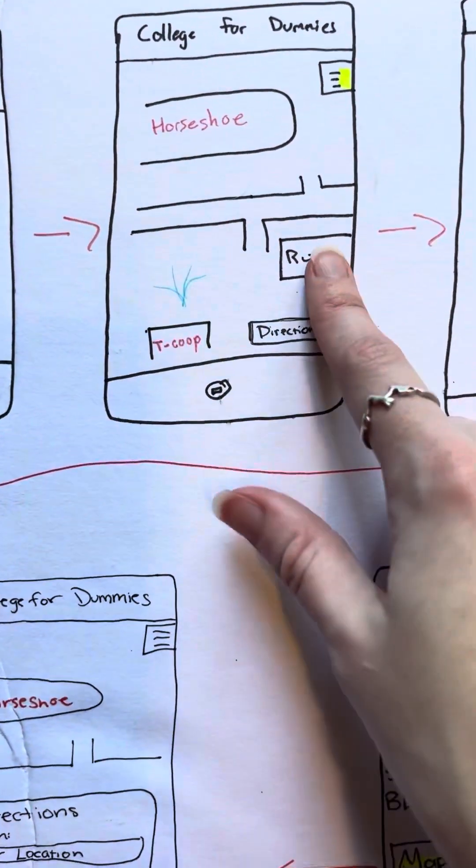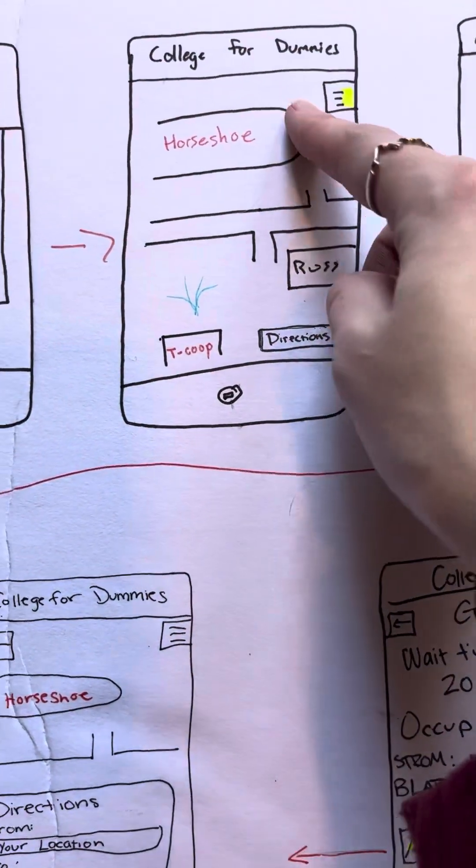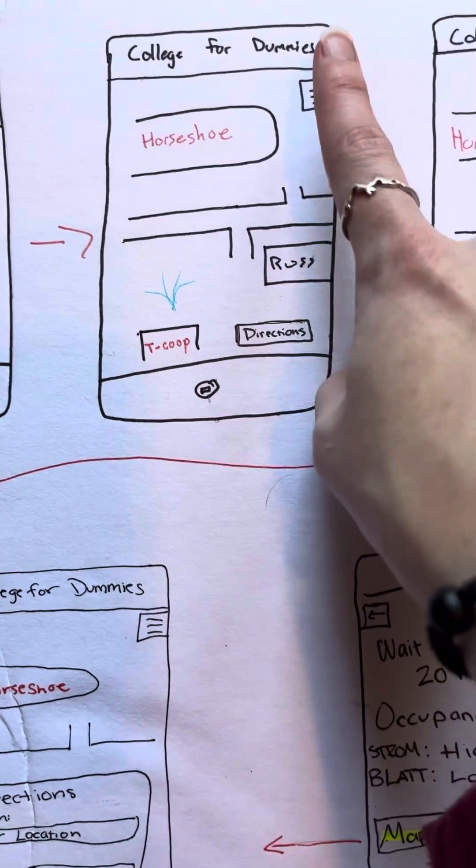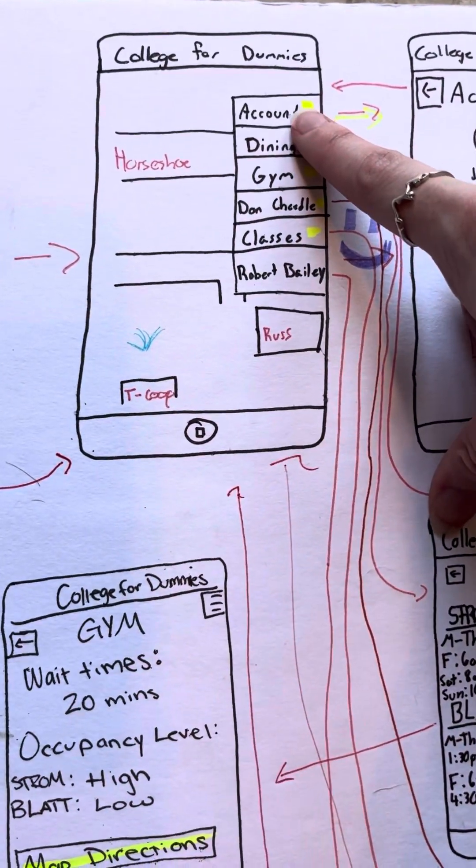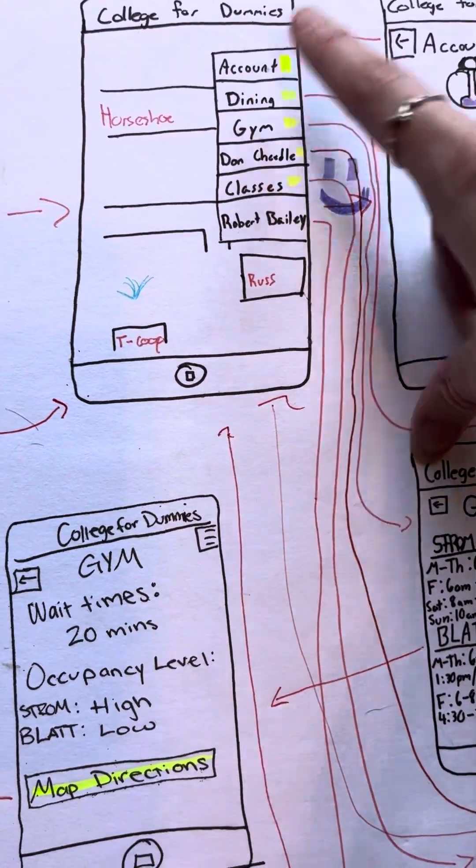Then you come to our main page, which is just the map itself. You have the map where you can enter directions or click on the sidebar to see all the options of where you need to go. First, we're going to go to our account.